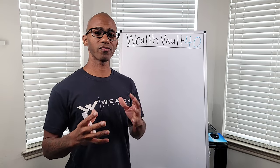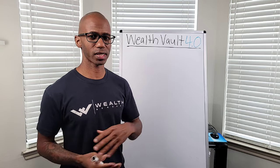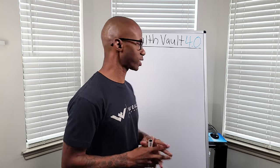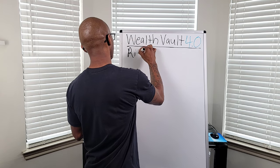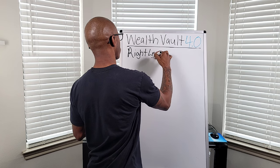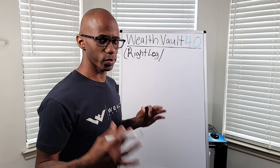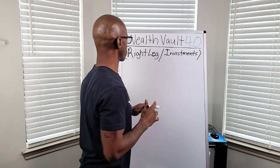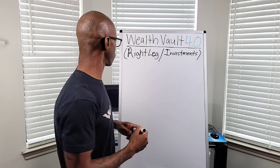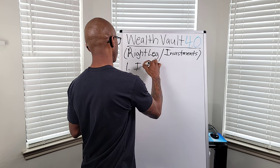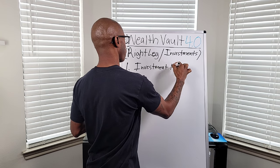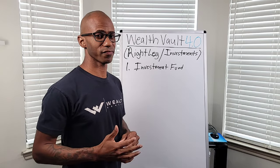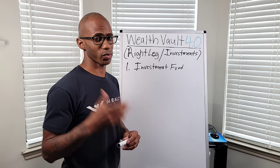WealthBowl 4.0 is considered the right leg — WealthBowl 4.0 and 5.0 are the legs, your right leg and your left leg. You can do one or you can do both; it's your choice. WealthBowl 4.0 is where you build all your investments, and it consists of one account: your investment account, or investment fund. There's a lot that goes into this — we have a lot of investments we like to use with this system. Stay tuned for that video coming soon.